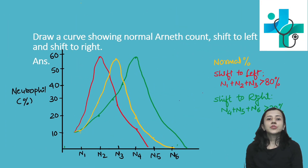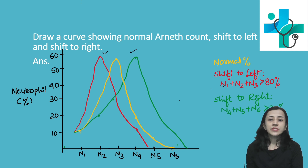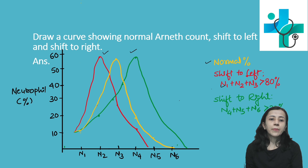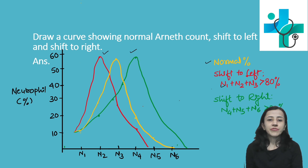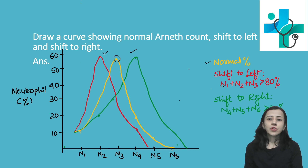The normal Arneth count curve is drawn showing shift to right and shift to left. Plotting the normal percentages of each stage on a graph gives a normal curve with the highest point at N3. N1, N2, N3, N4, and N5 stages have various numbers, with the N3 stage cell being the highest.